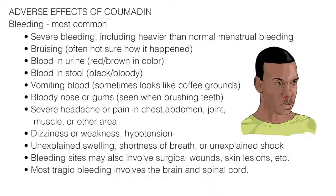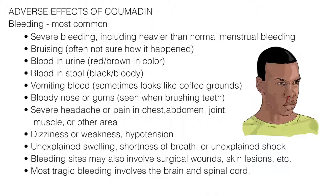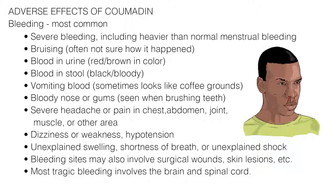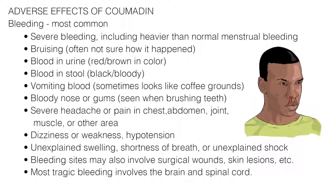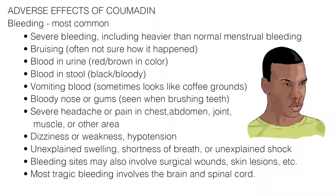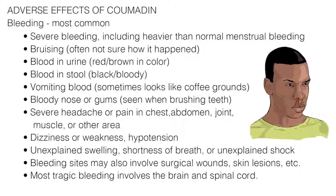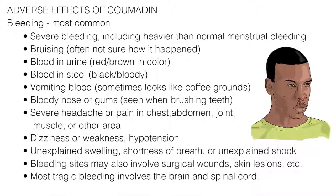The most common adverse effect of Coumadin is bleeding, occurring anywhere in the body, spontaneously or in response to a minor trauma. Bleeding complications may present as severe bleeding, including heavier than normal menstrual bleeding, inexplicable bruising, blood in urine which causes it to be red or brown in color, blood in the stool causing it to be black or bloody, vomiting blood which sometimes looks like coffee grounds, and a bloody nose or gums which are seen when brushing the teeth.